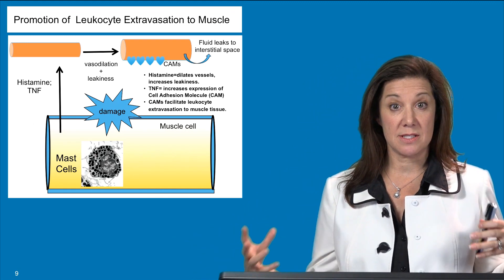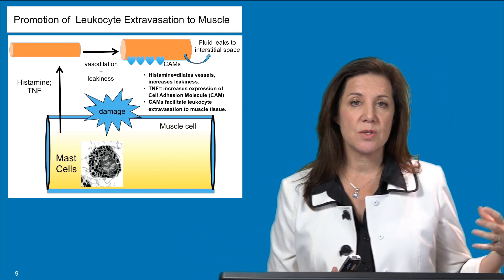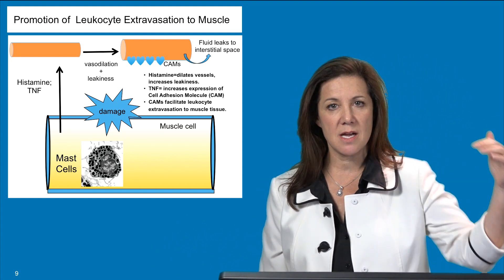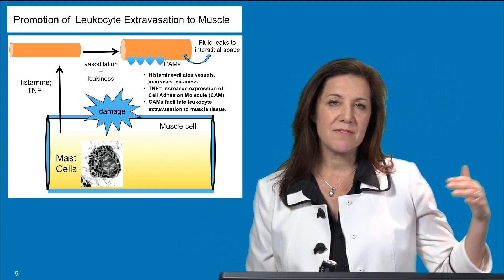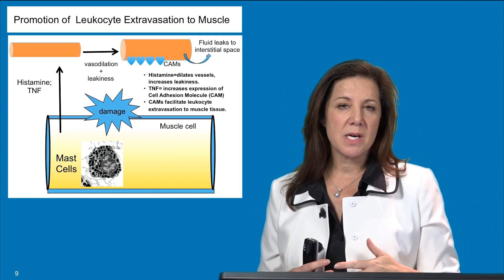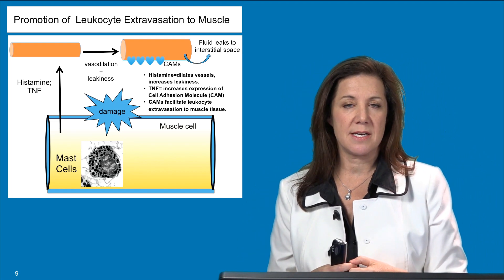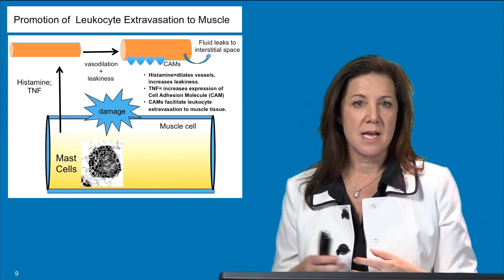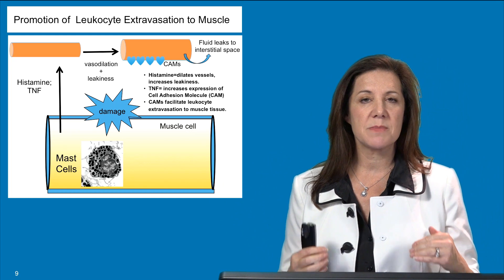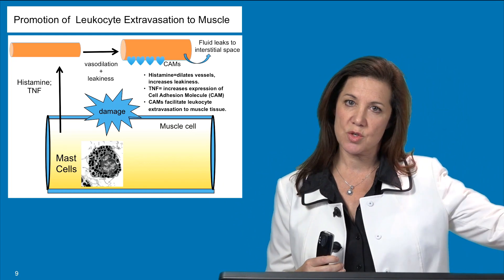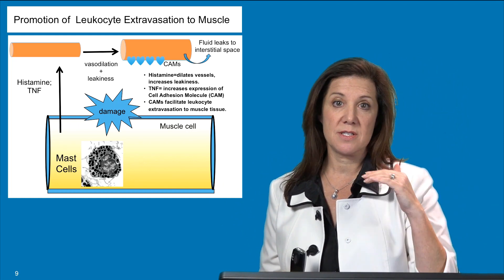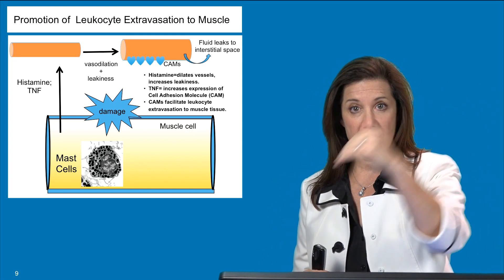Histamine causes blood vessels to swell and become leaky; when they become leaky, fluid leaks out into the interstitial tissues, producing swelling. The purpose is not to create swelling as a byproduct, but to allow immune cells to enter the tissue. Tumor necrosis factor also increases expression of cell adhesion molecules (CAMs), represented here as blue hearts, which act as a signal to immune cells traveling through the vasculature to come into this damaged tissue.